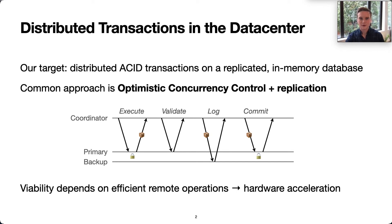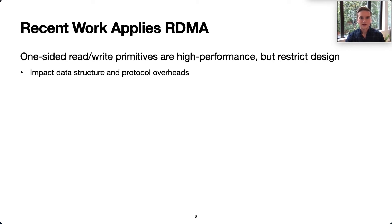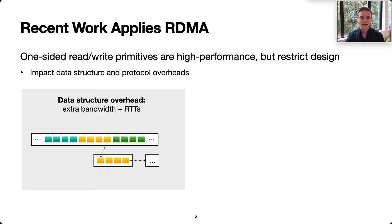As a result, there has been a focus on hardware acceleration. Recent research projects have used one- and two-sided RDMA to optimize transactions. One-sided RDMA allows the NIC to read and write application memory directly, with the goal of reducing latency and saving CPU cycles on the target server. In practice, though, applying one-sided RDMA results in new overheads. Systems that use one-sided reads for hash lookups must read several objects at a time in order to achieve good latency.